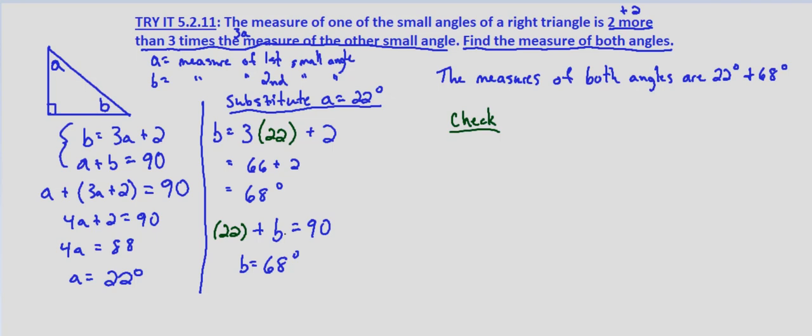So B is 68 degrees, A is 22 degrees, and we have B equals 3A plus 2. Does 68 equal 3 times 22 plus 2? Does 68 equal 66 plus 2? And it does check: 68 equals 68.